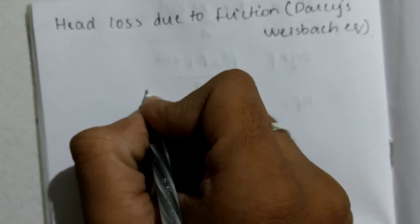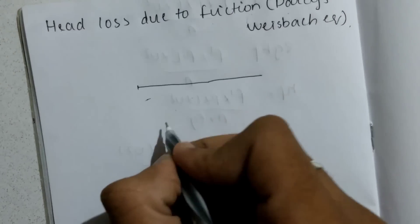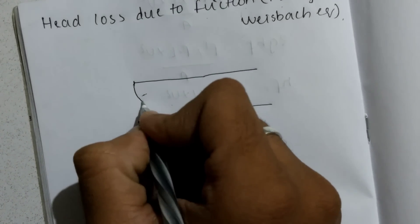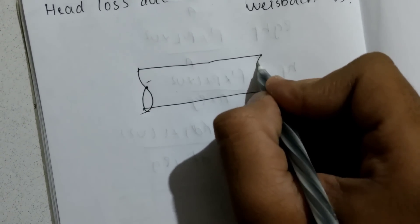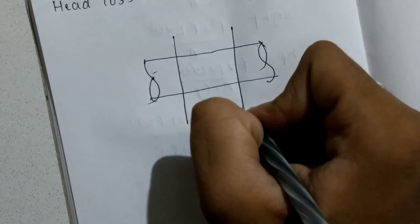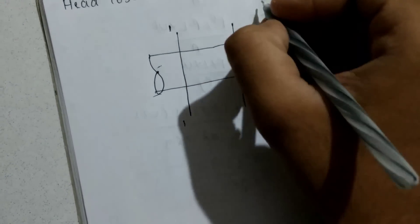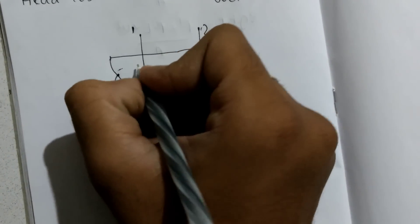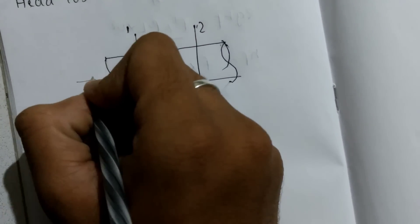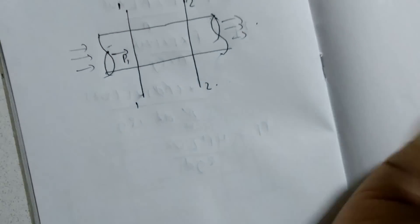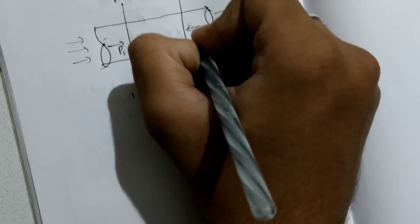Let us consider a uniform pipe. When I talk about uniformity, it's about the area — the area of the pipe is constant throughout. And let us consider two sections: section one and section two. The fluid is flowing from here and exits from here.